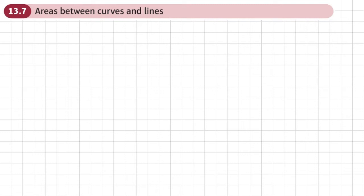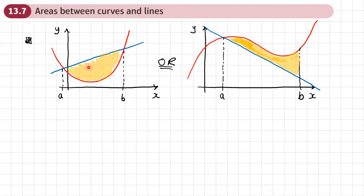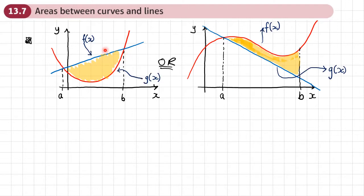This is the second and final section of chapter 13 on integration, and here we're looking at the area between curves and lines — finding this type of orange shaded area where you've got maybe a line at the top and a curve underneath, and they cross at certain points which become our limits. I'm going to refer to the function that forms the top of the region as f(x) and the one that forms the bottom as g(x).